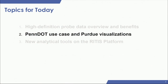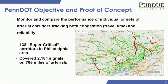PennDOT was interested in monitoring and comparing arterial performance using a methodology developed by Purdue University and presented at TRB in 2017. In this methodology, Purdue defined two metrics using probe data: travel time reliability and congestion severity. PennDOT was interested in applying these metrics to a subset of 138 corridors in the Philly area to see what results they could get and whether it would be useful.